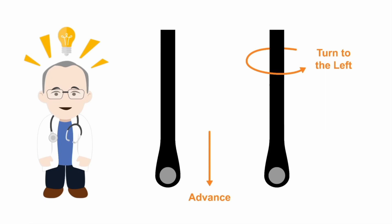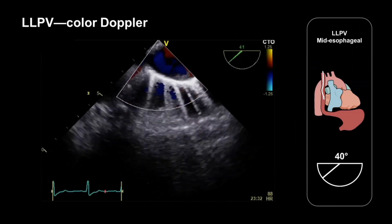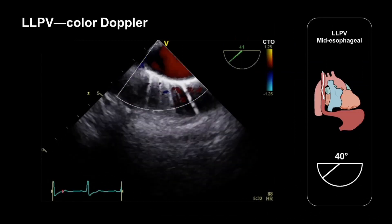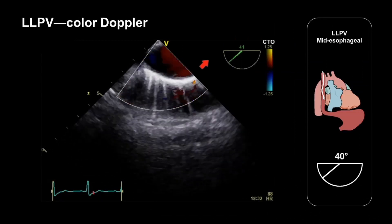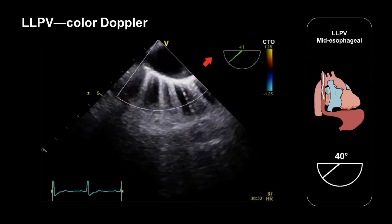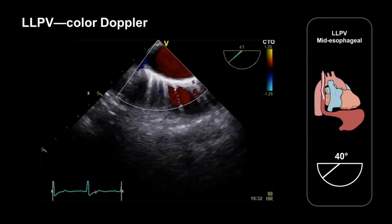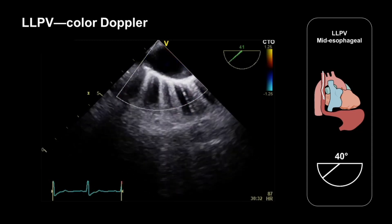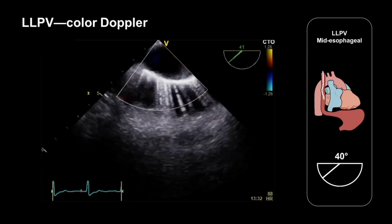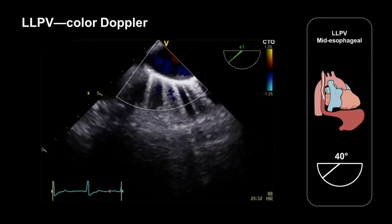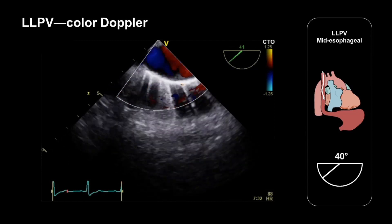Let's now move on to the left lower pulmonary vein. To find this we advance the probe a little more down the esophagus and turn it a little further to the patient's left. Here we can appreciate how the left lower pulmonary vein inserts into the left atrium in a more horizontal orientation than the left upper pulmonary vein. As with the left upper pulmonary vein, we should assess the anatomy using 2D imaging and then assess flow patterns using colour and pulsed wave Doppler.